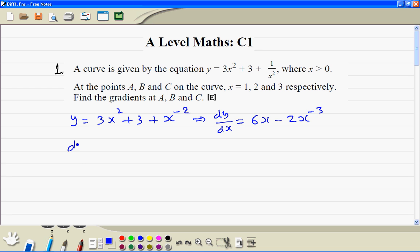So we have dy/dx equals 6x minus 2 divided by x cubed. Now point A, we substitute x equal to 1 into this dy/dx, so we get the answer 6 minus 2 divided by 1, which is just 2, so the answer is 4.